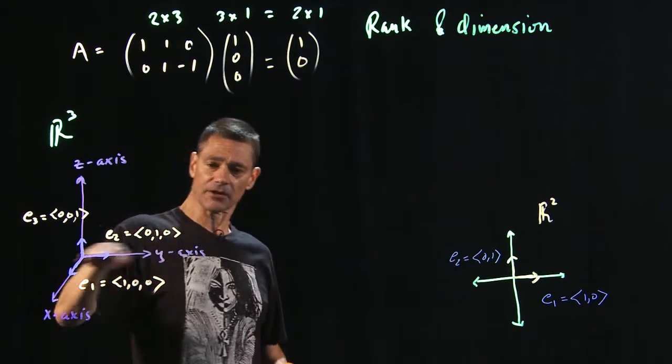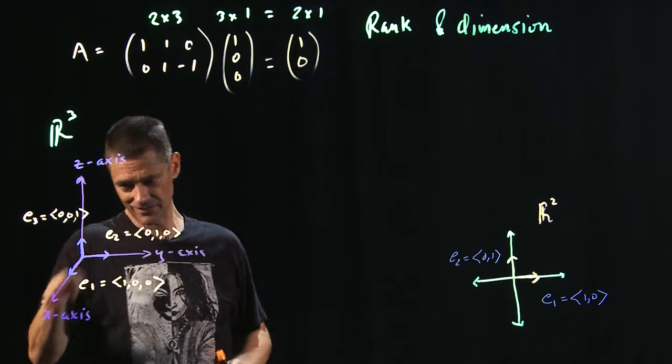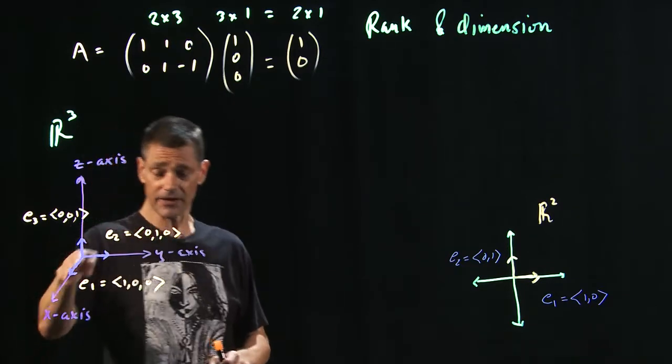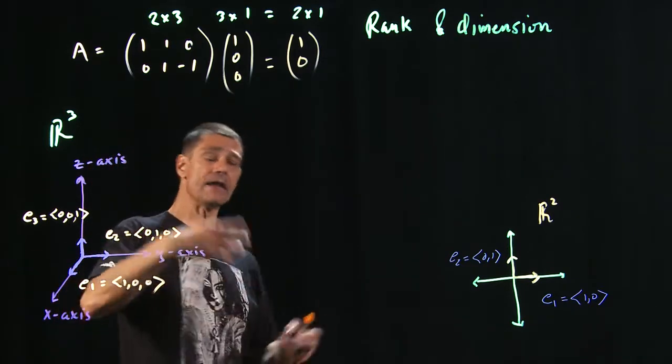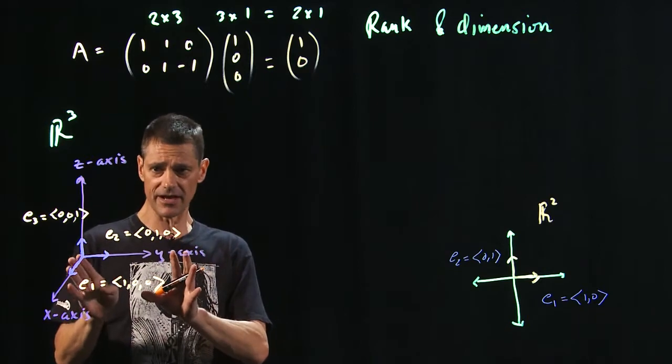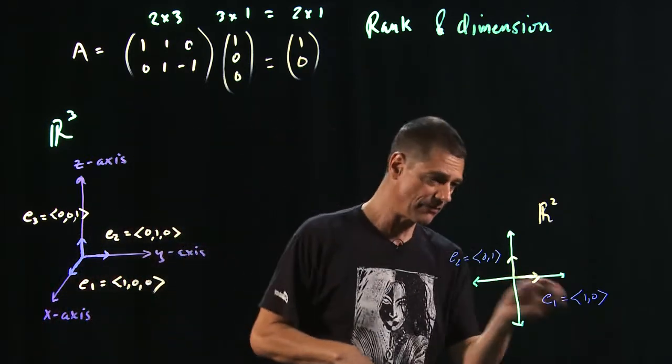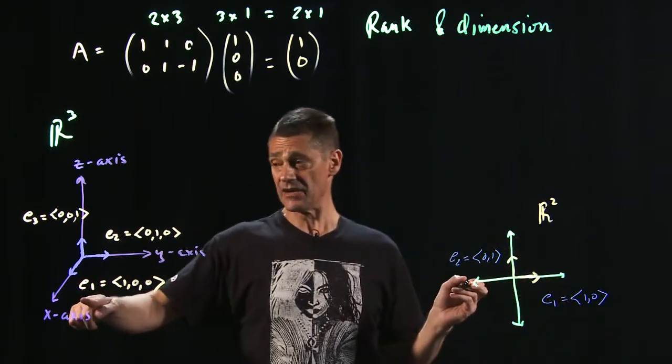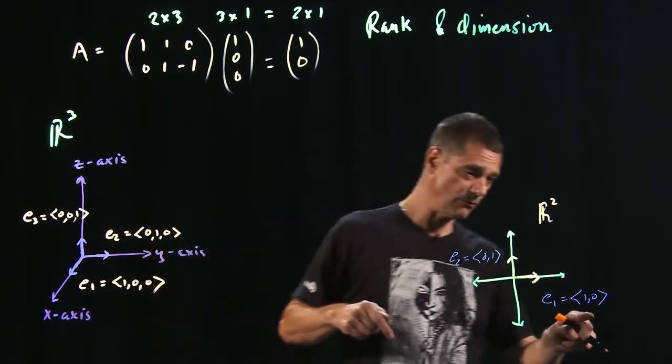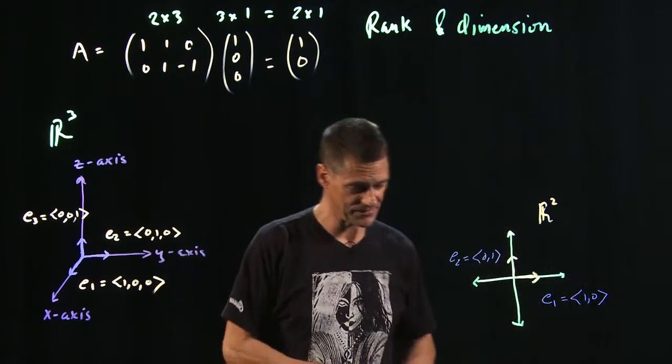So this did absolutely nothing to this unit vector, which means that any vector along, oops, this is the x-axis. Any vector along the x-axis, all the elements of the vectors along the x-axis are going to be mapped back towards that. And I already wrote this down a little bit. So E1 in R³ gets mapped to E1 in R², just a happenstance.